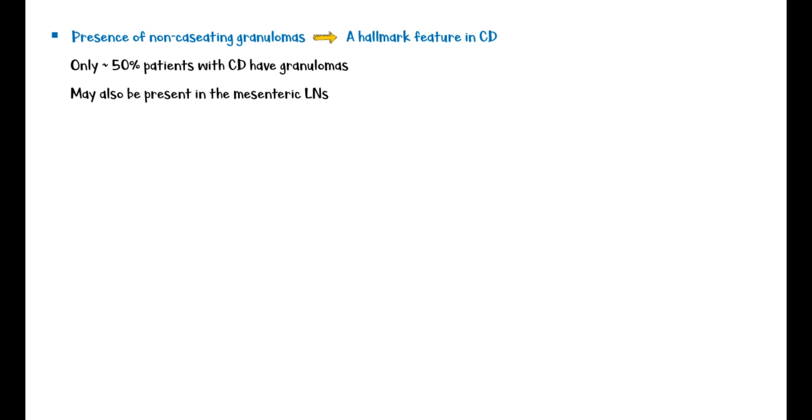Presence of non-caseating granulomas is a hallmark feature of Crohn's disease. However, only about 50% of patients with Crohn's disease will have granulomas. They may also be present in the mesenteric lymph nodes. Cutaneous granulomas often form nodules known as metastatic Crohn's disease.